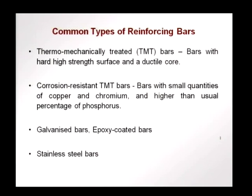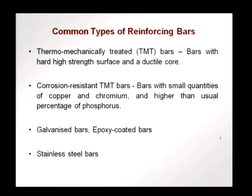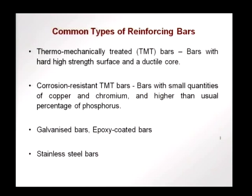What is now more common is what we call TMT bars — thermo mechanically treated bars — with hard high-strength surfaces but a ductile core. There are also corrosion-resistant TMT bars where a small amount of copper and chromium and a higher than usual percentage of phosphorus is used, increasing corrosion resistance. Other special cases include galvanized bars with a surface treatment preventing corrosion, epoxy coated bars where water and oxygen do not reach the bars, or in extreme cases even stainless steel bars used as reinforcement.